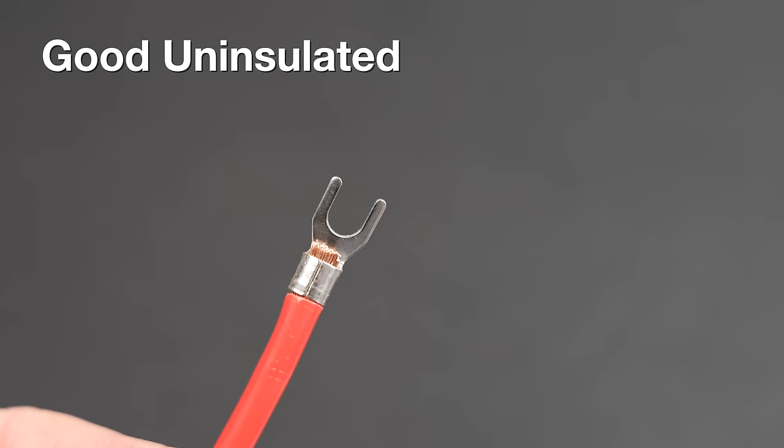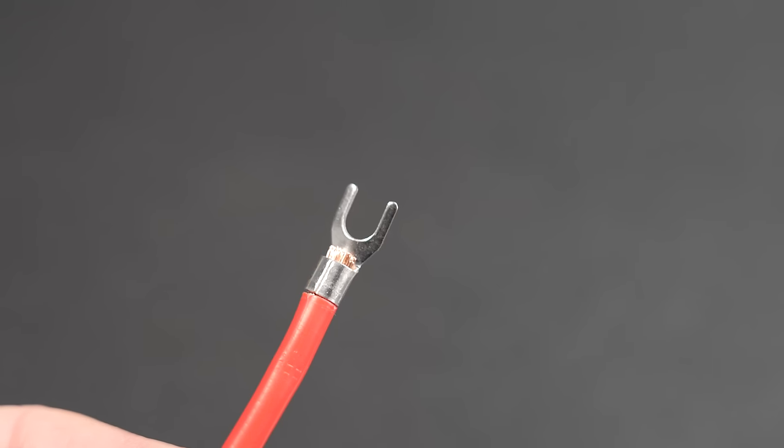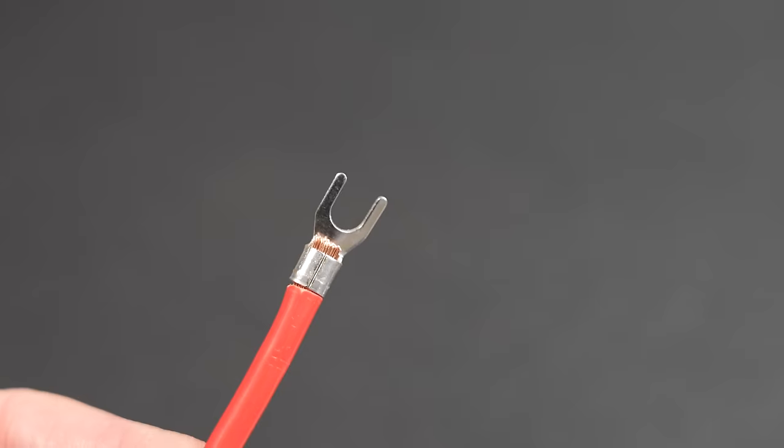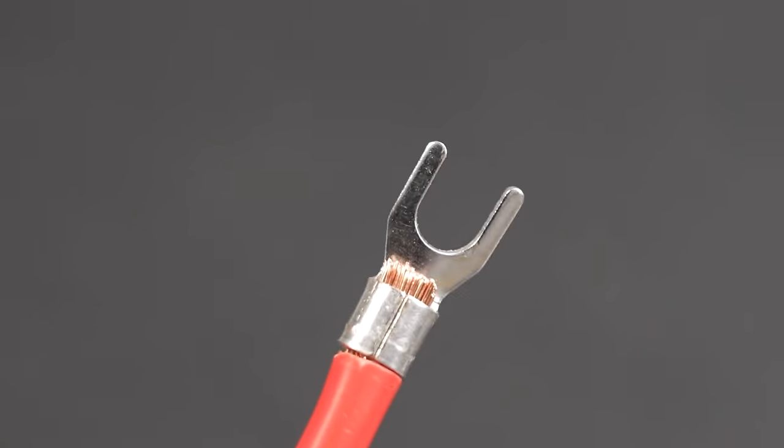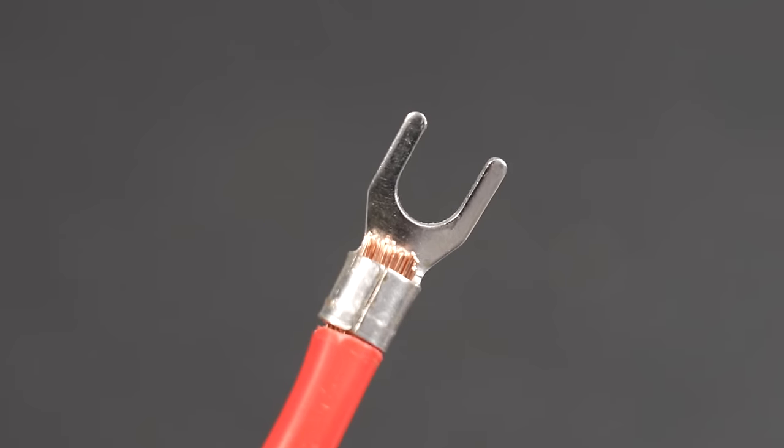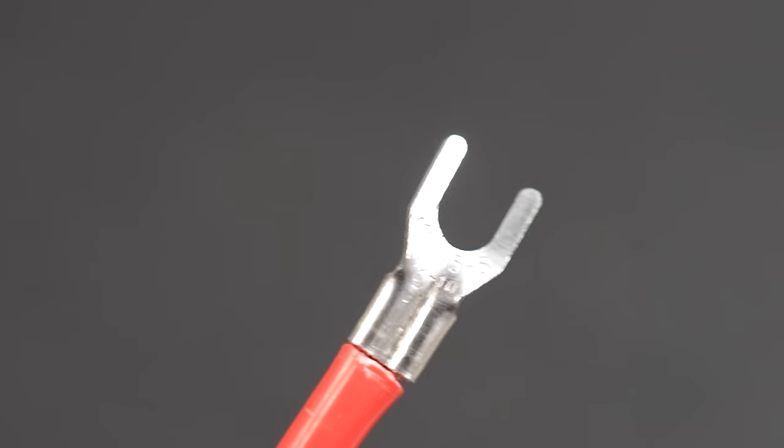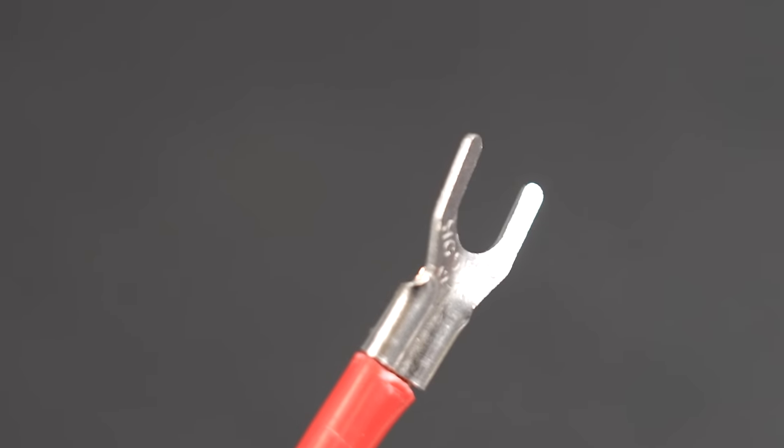And now for two perfect results. This is exactly what you want to strive for. This one of course is an uninsulated connector crimped correctly using a manual tool. It's smooth on the seam side with a little bit of wire extending past the crimp and when we reverse it you can see that telltale impression of the tooth ensuring that we got enough compression to give us a good result.